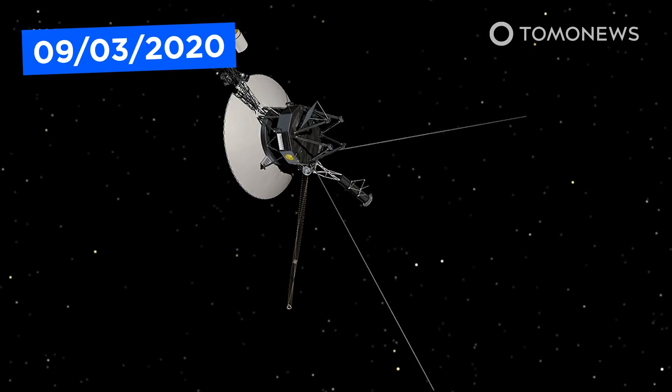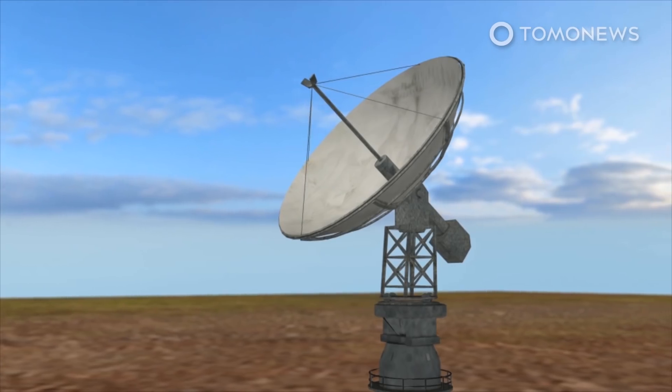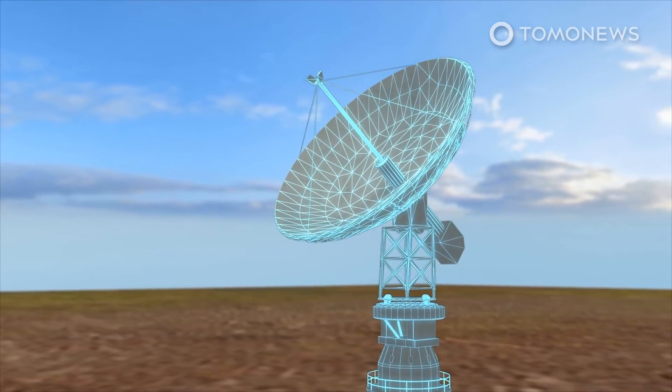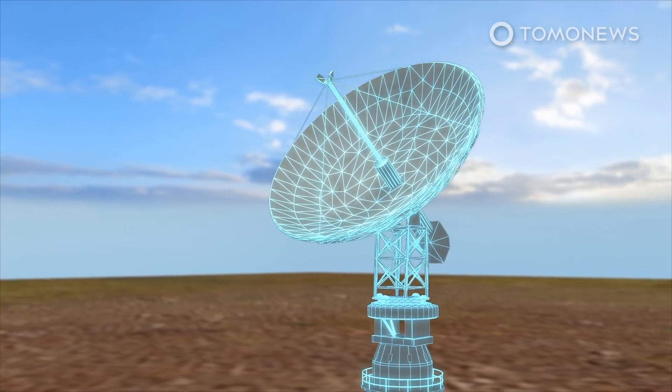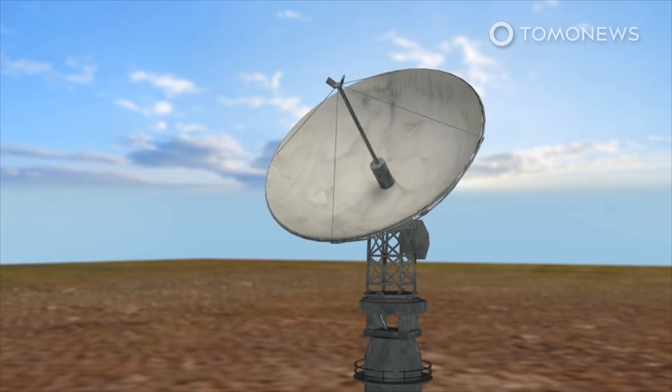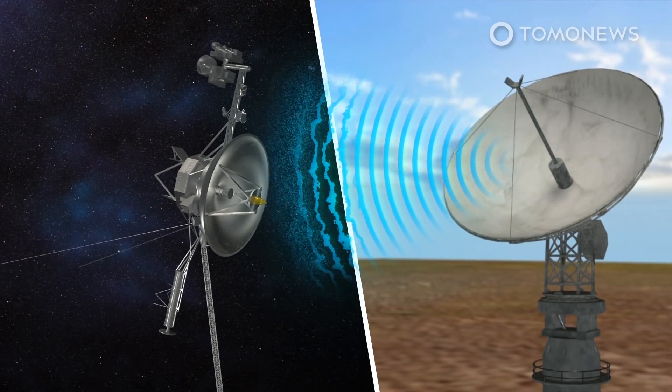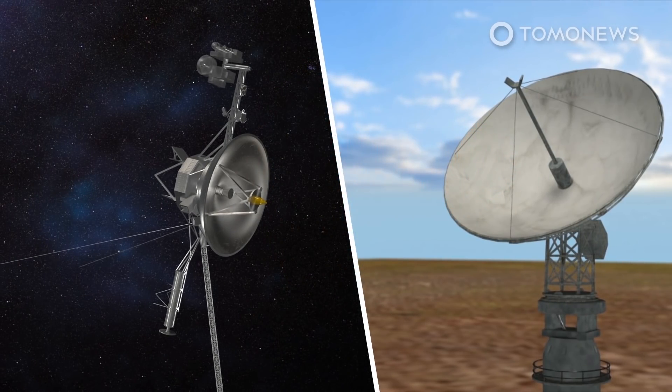NASA will stop talking to Voyager 2 for almost a year. Starting early this month, Voyager 2 will stop receiving commands from NASA, the space agency announced in a news release on March 5th. This is because the transmitter that sends commands to Voyager 2, the DSS-43 radio antenna near Canberra, Australia, will undergo critical upgrades over the next 11 months.